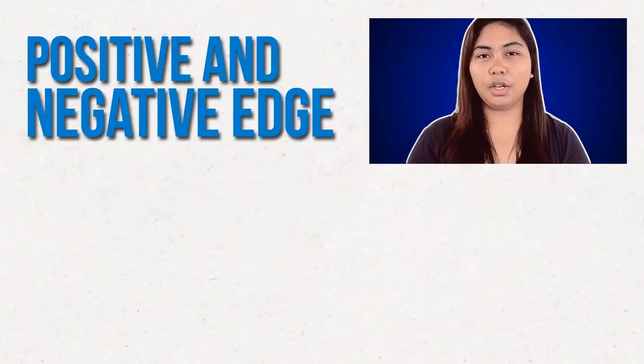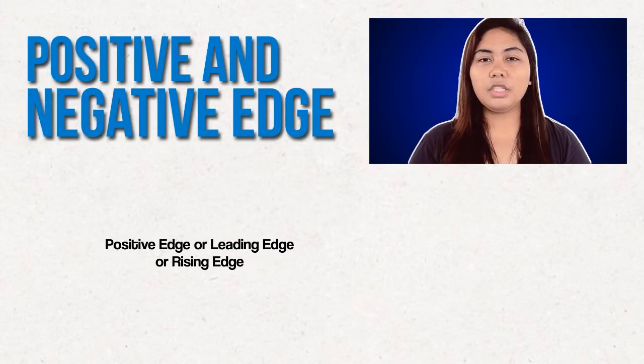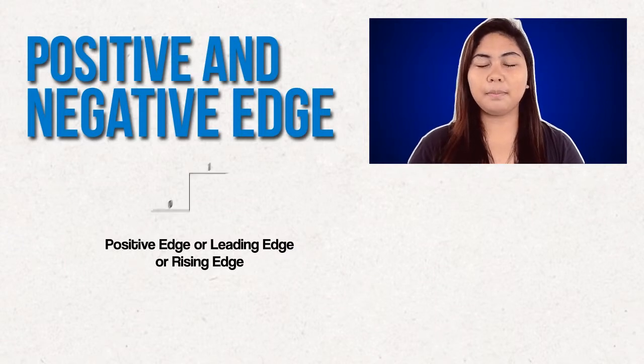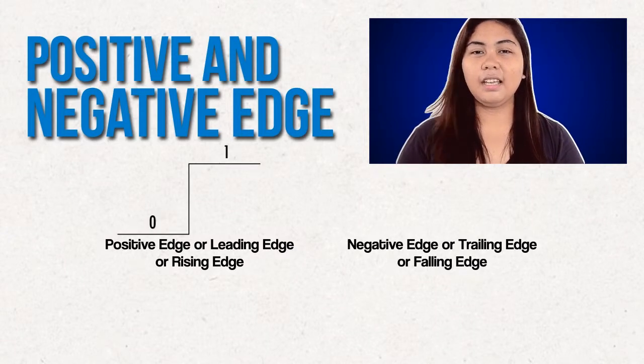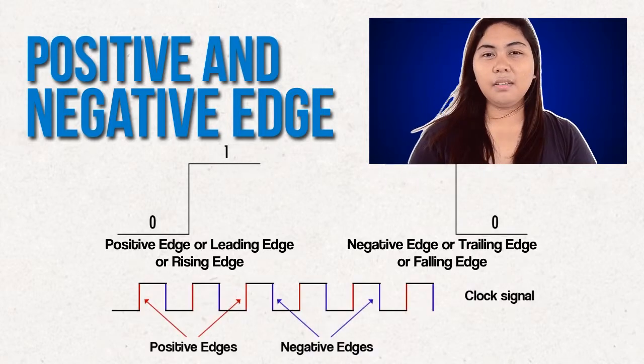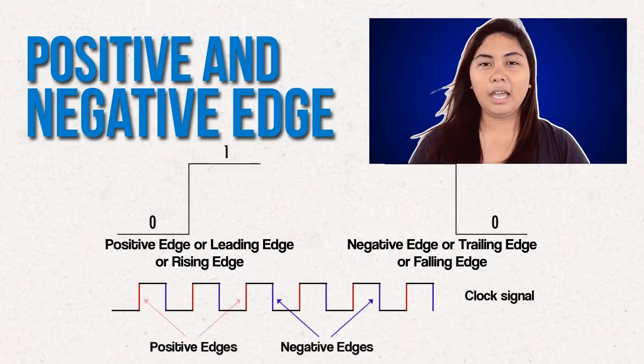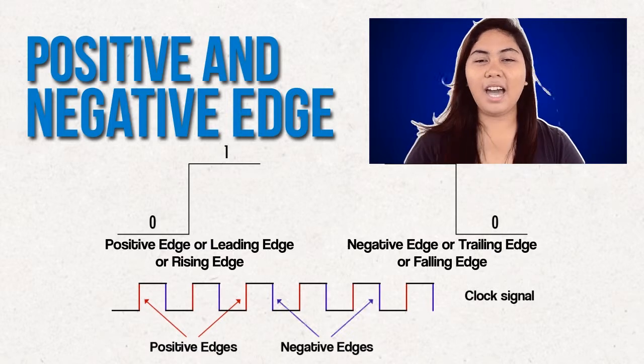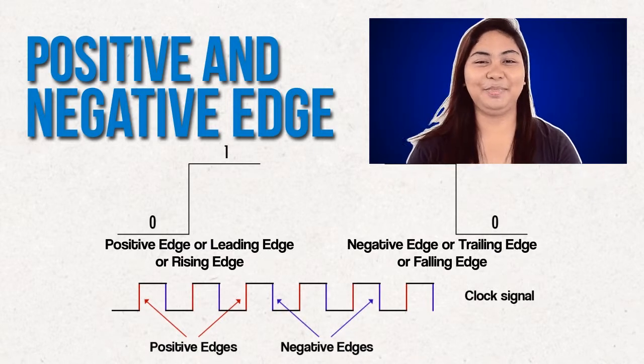The next topic is positive and negative edge, presented by Haile Co-Studio. Positive edge-triggered flip-flops is a transition from 0 to 1, and negative edge-triggered flip-flops is a transition from 1 to 0. Positive edge-triggered flip-flops starts from low to high, and negative edge-triggered flip-flops starts from high to low.